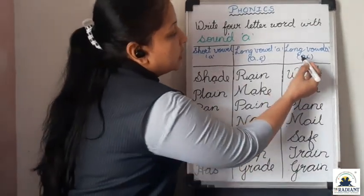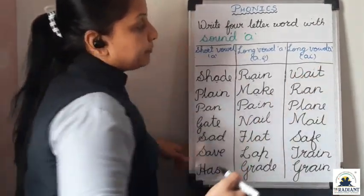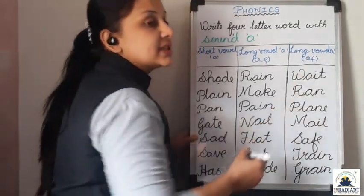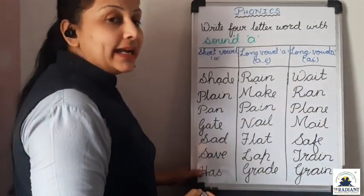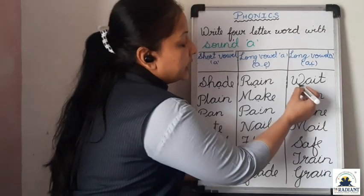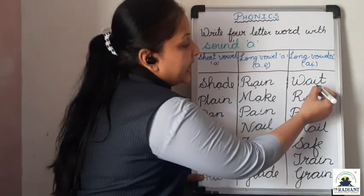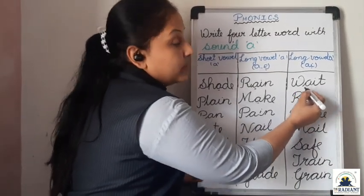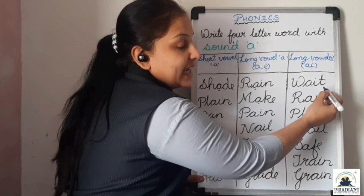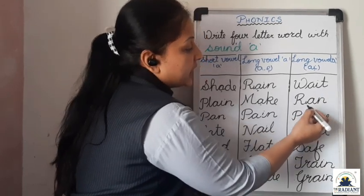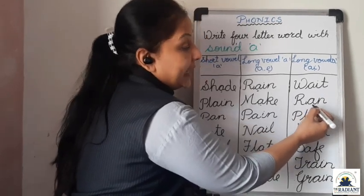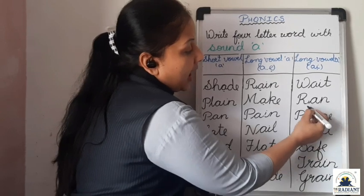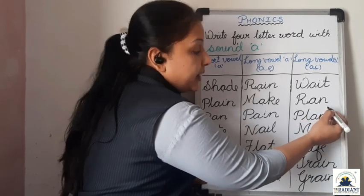The another long vowel sound A is one in which we have to add a little sound of I. W, A, I, T — Weight. R, A, N — Ran.